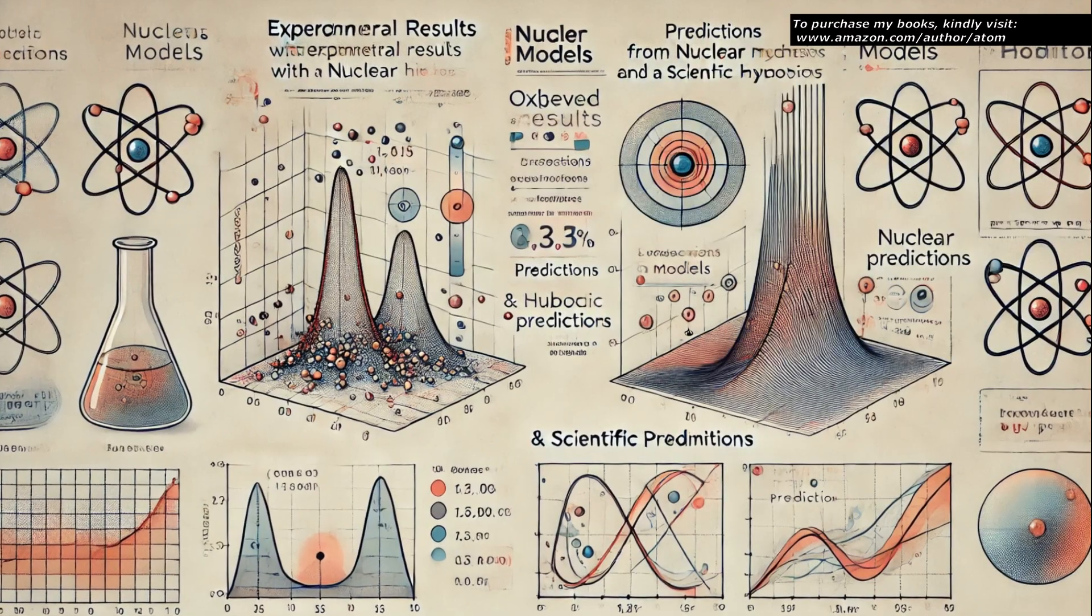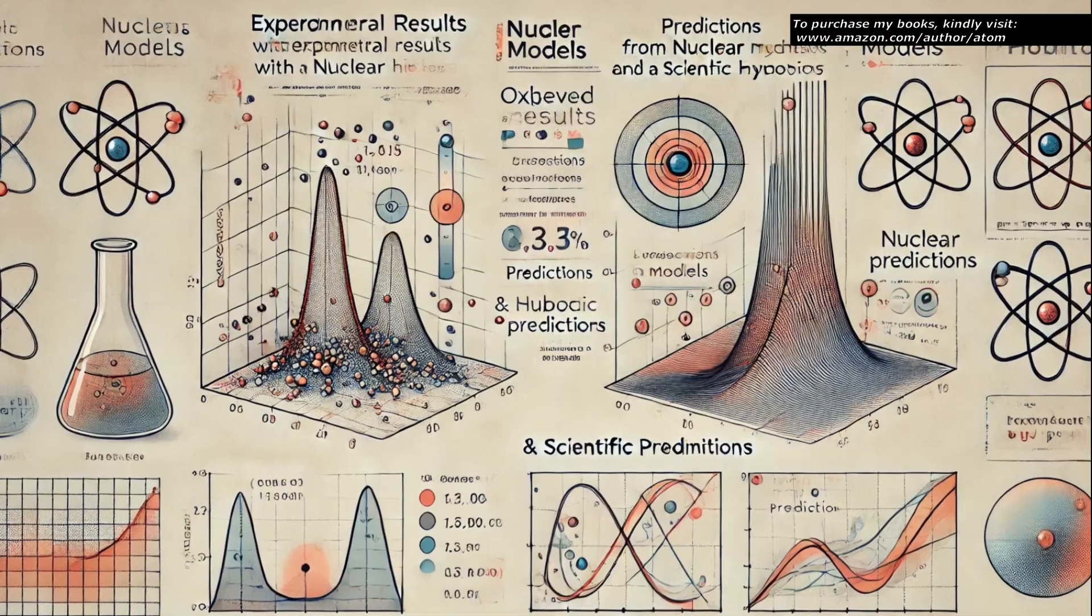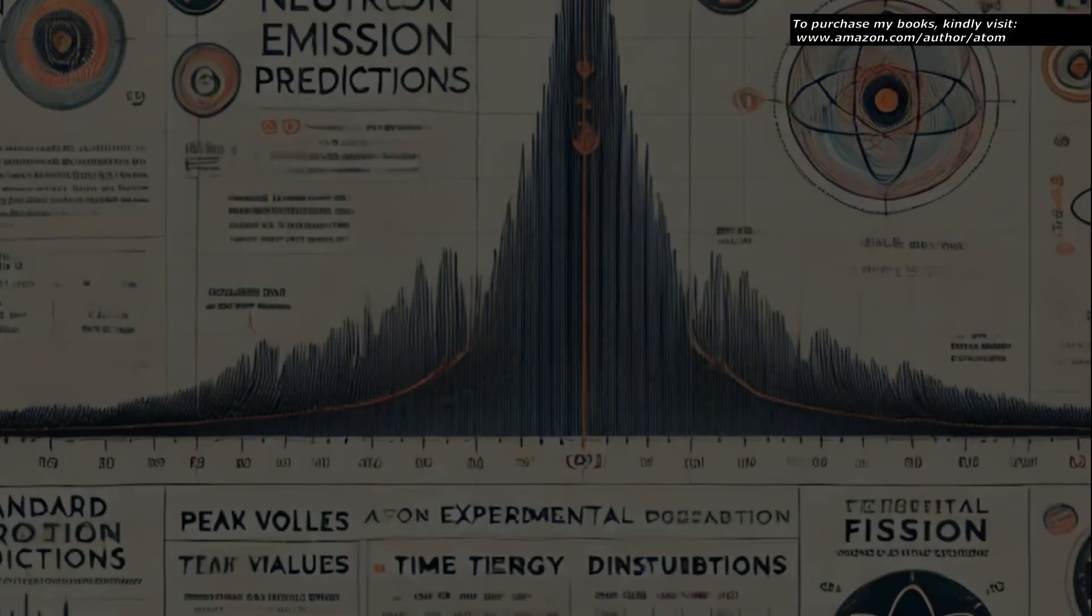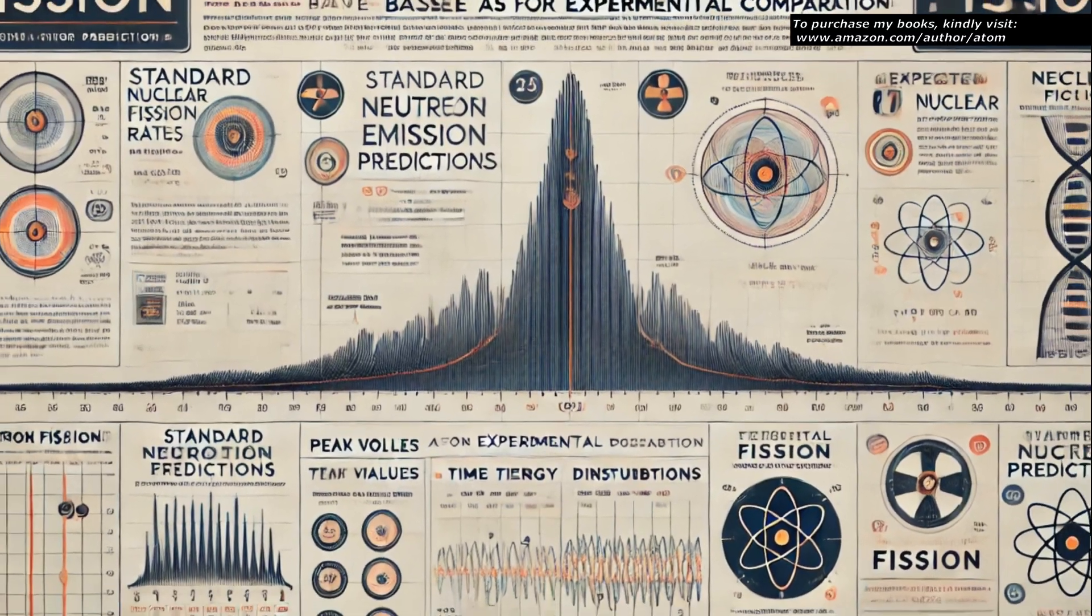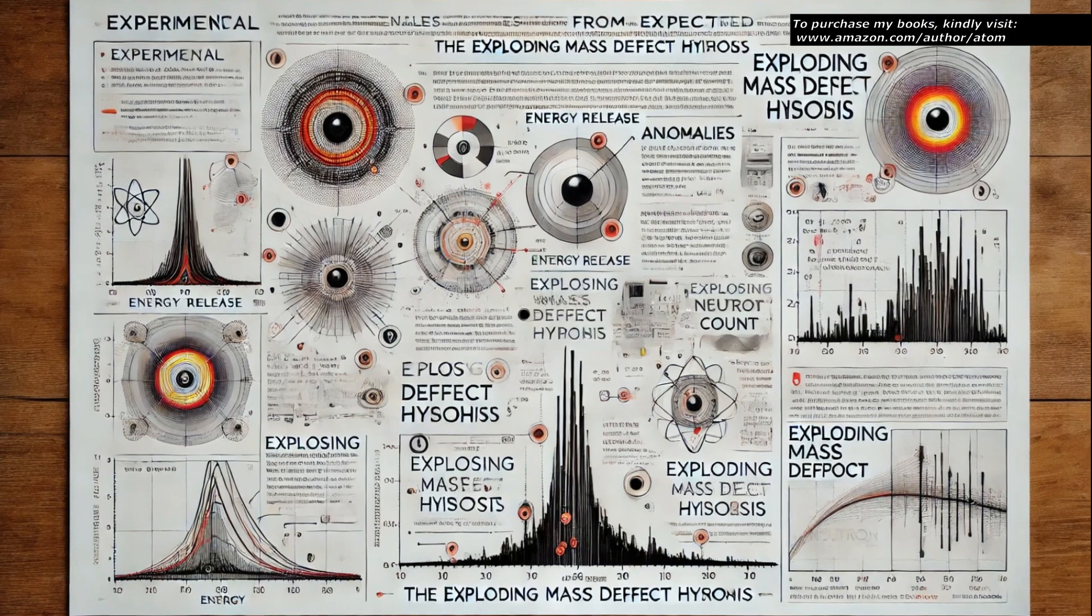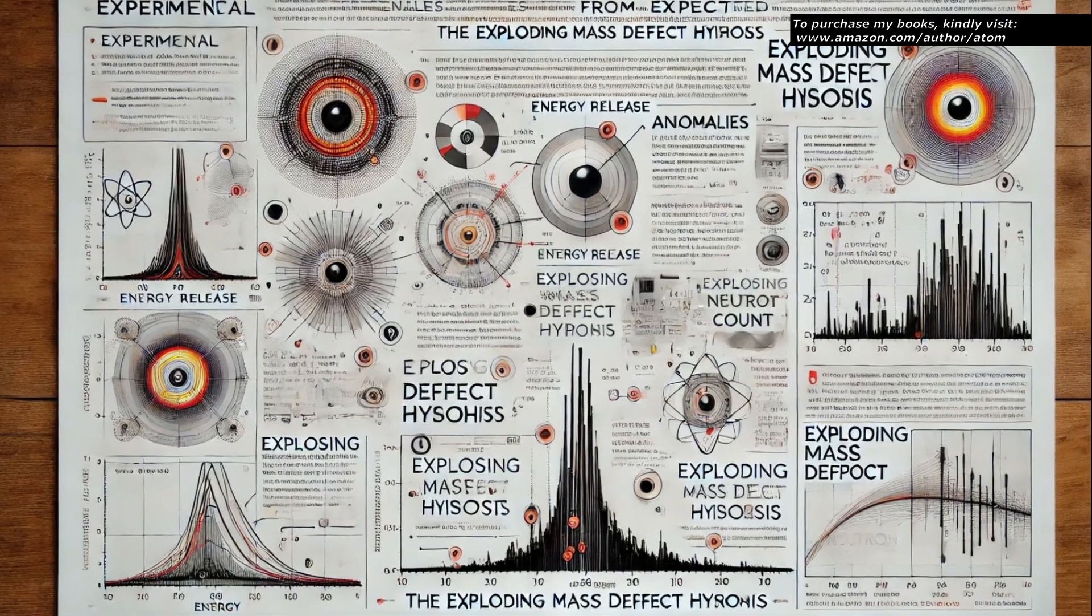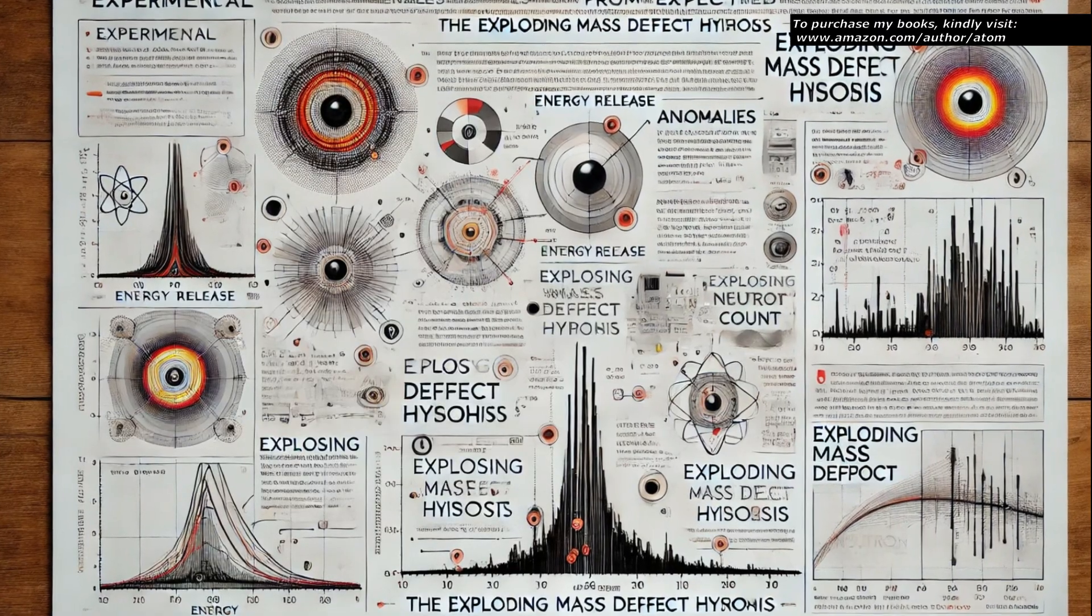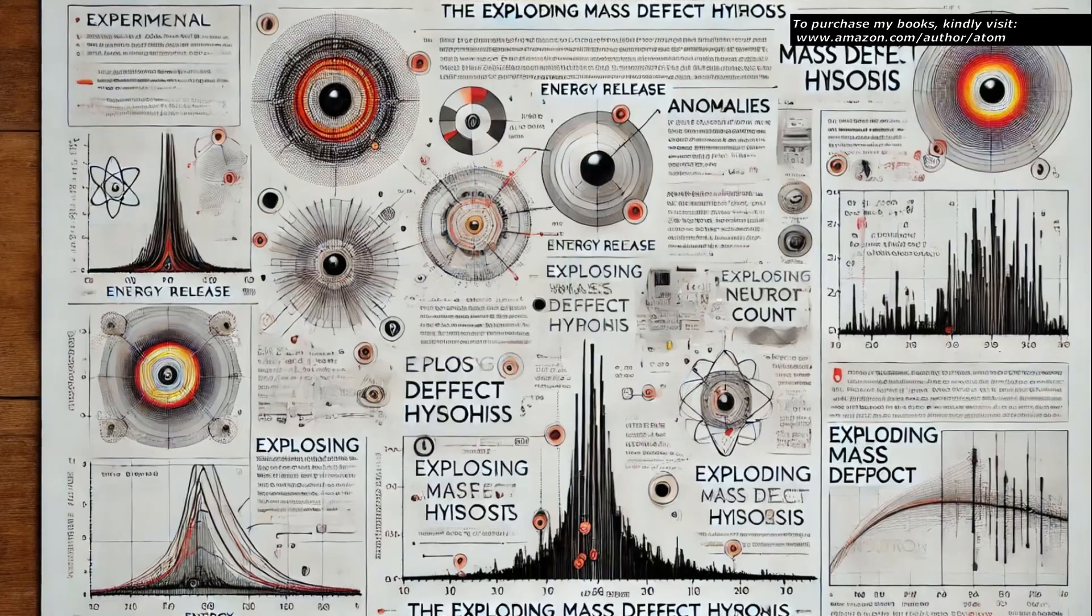The results are then compared with predictions from conventional nuclear models and the exploding mass defect hypothesis. Standard models of nuclear fission are used to predict expected signals, serving as a baseline for comparison. Any observed anomalies or discrepancies that cannot be explained by conventional theories are scrutinized to determine if they align with the hypothesized shock waves resulting from the explosive transformation of the mass defect.